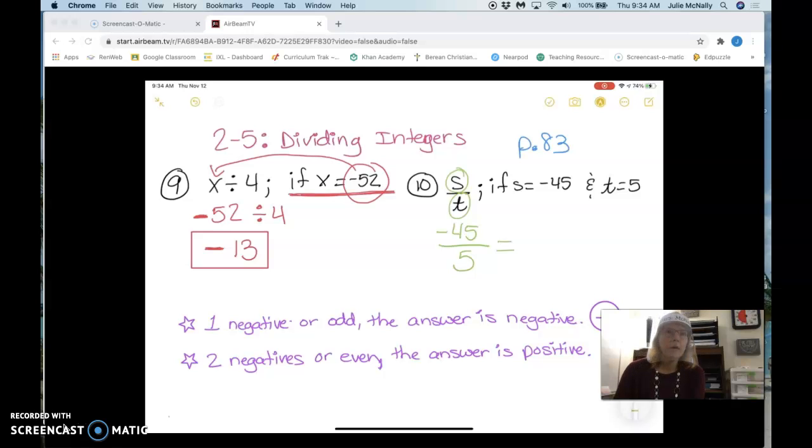Is my answer going to be positive or negative? You forgot to put the negative. It's positive 5. That's an equals. T equals 5. Wait, you forgot it's negative. So it's going to be negative, because there's only one negative, actually, in this one. And what is 45 divided by 5? 9. 9.